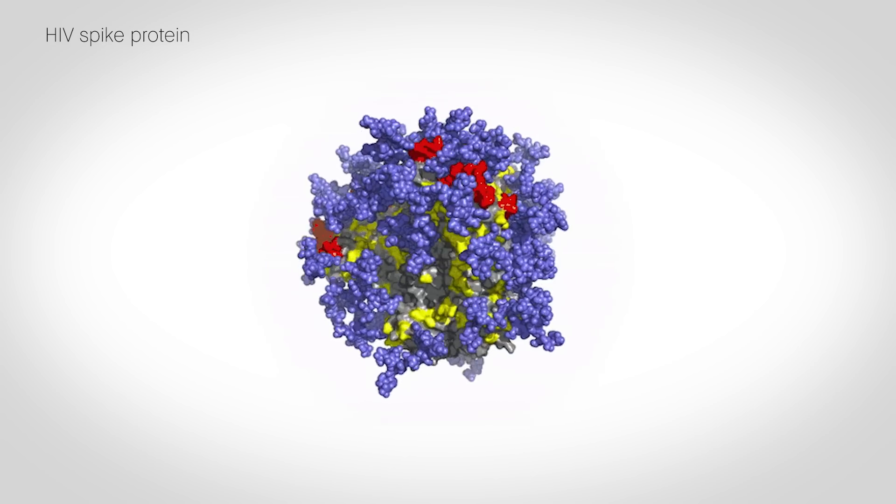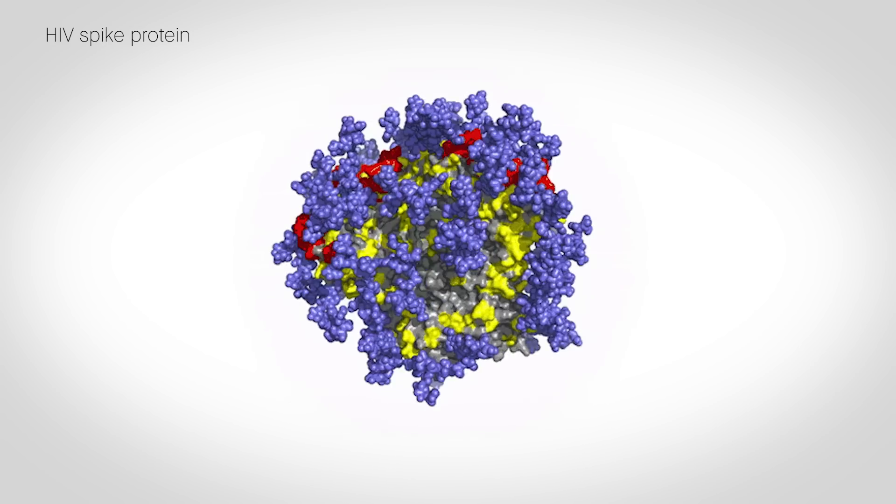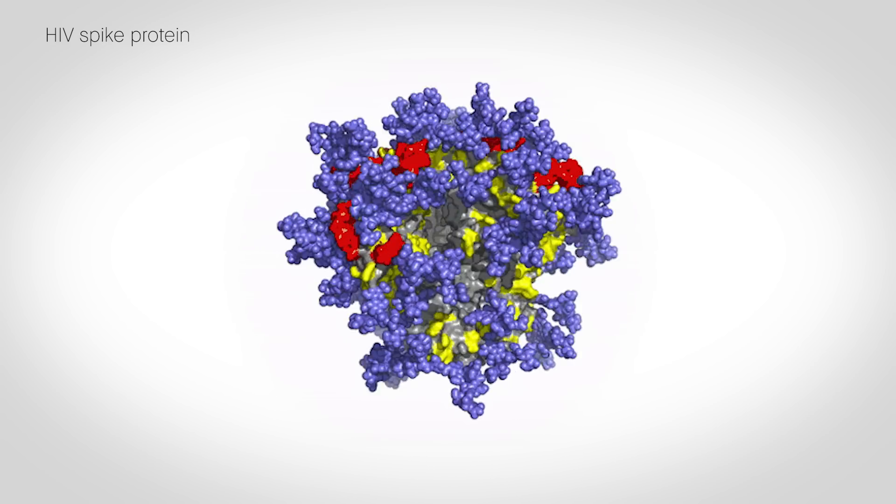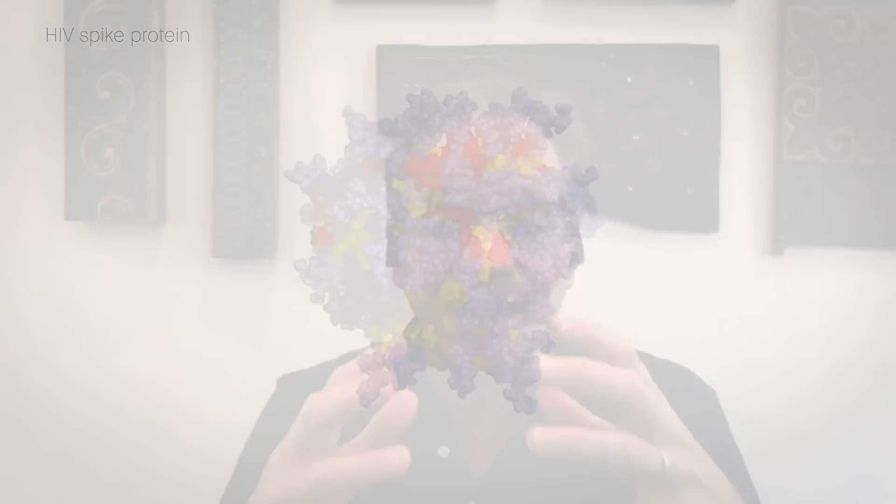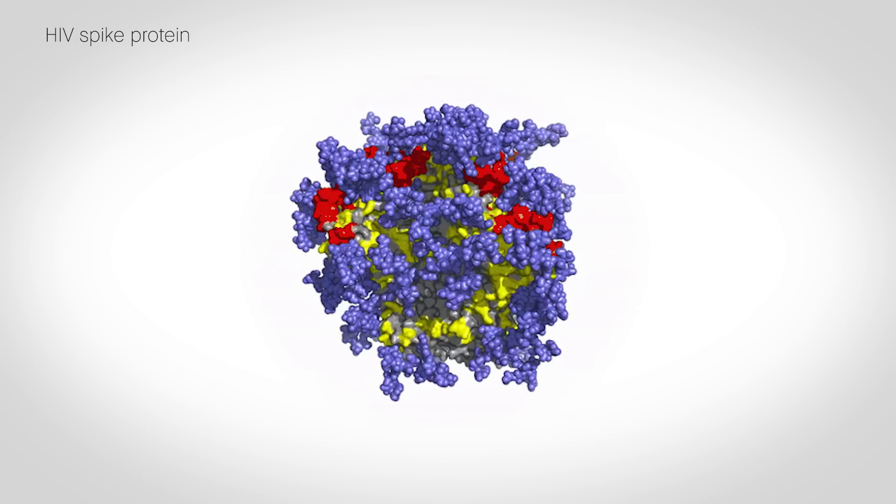HIV has millions and millions of different strains. And that means that antibodies against one virus, against one HIV spike, will not block another HIV spike. So HIV is not really one virus — it's really like 50 million different viruses around the world right now.